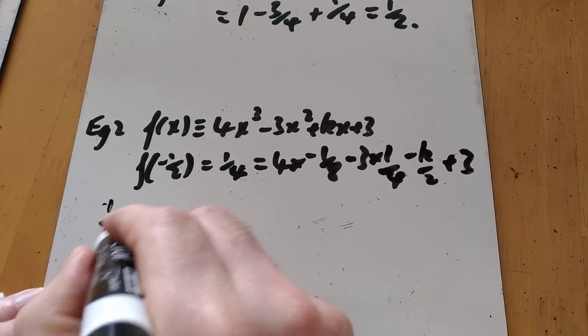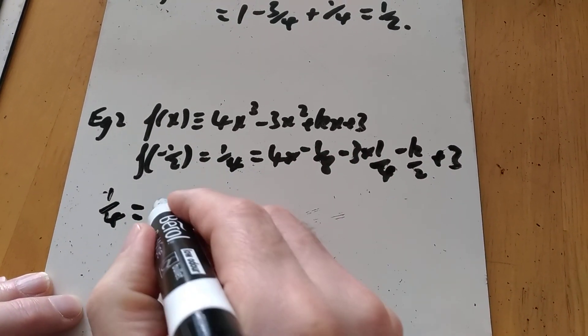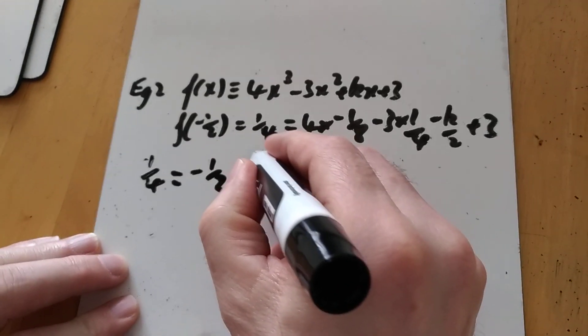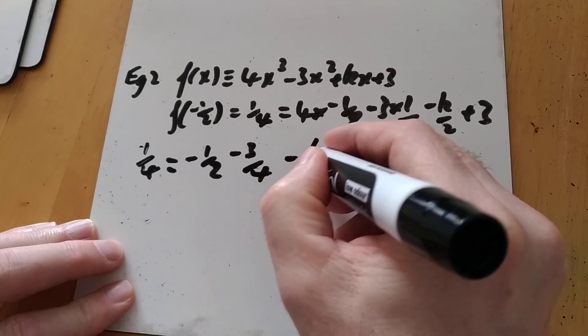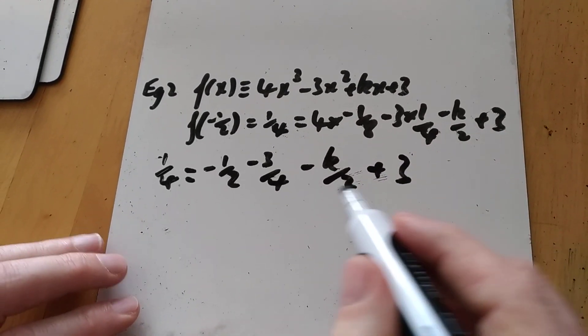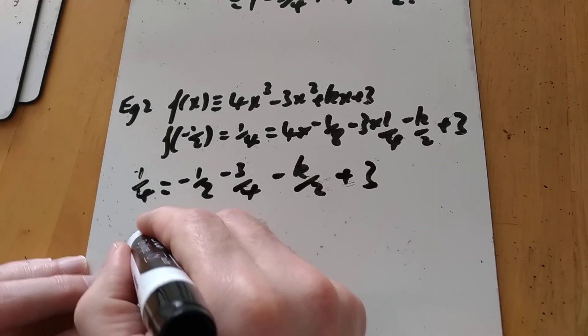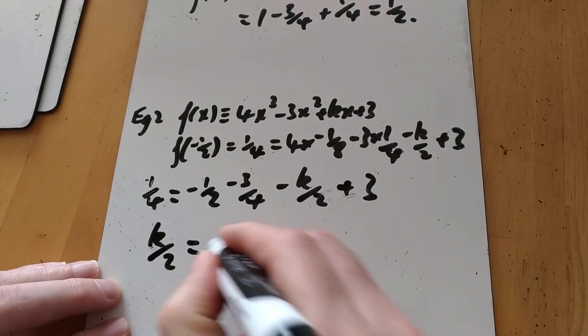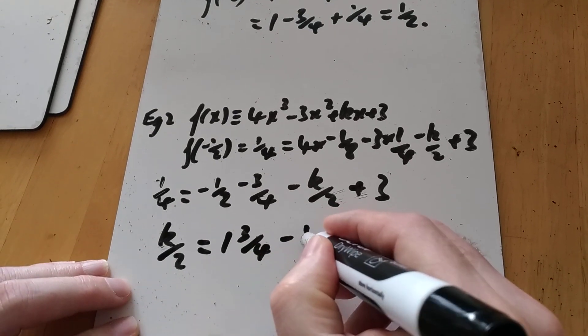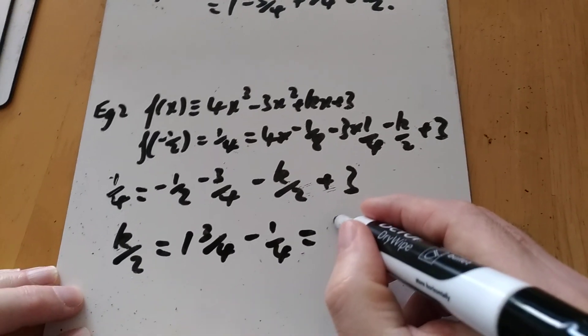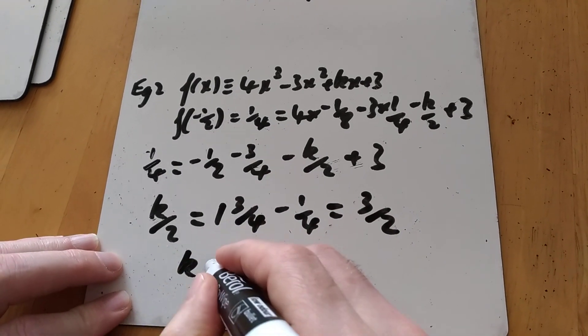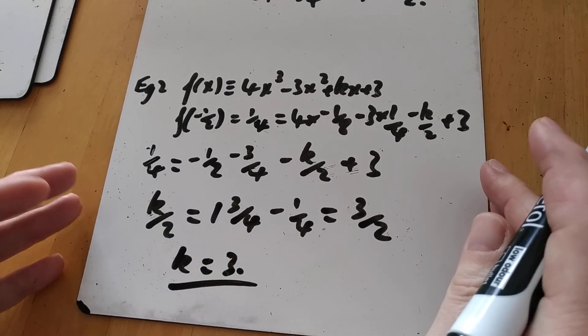So I've got my quarter equals 4 times minus an eighth is minus a half, minus three quarters, minus k over 2, and then plus 3. And rearrange it to make the k over there. 3 minus a half minus three quarters is 1 and 3 quarters, minus that quarter there, which is 1 and a half, and then 3 over 2 times by the 2 to get k equals 3. Nice and straightforward.